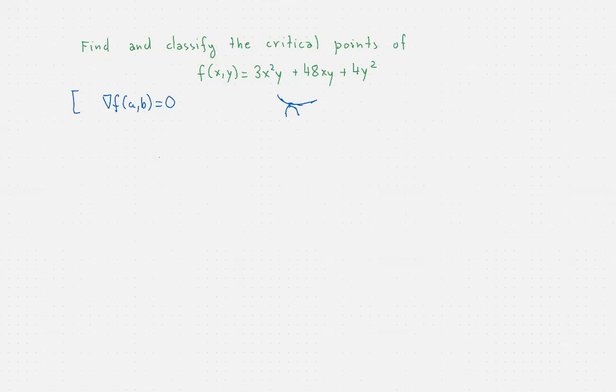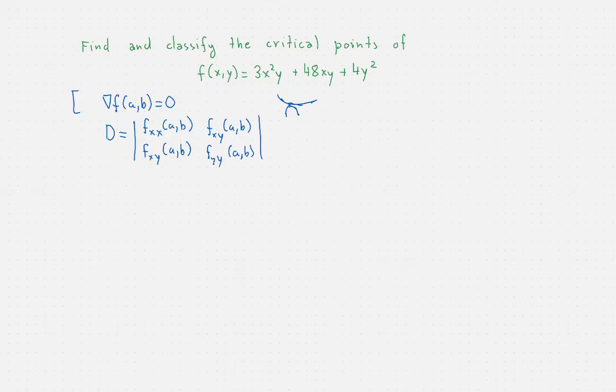In any case, the bottom line is that once we have a critical point, in order to find what kind of situation we have in our hands, we compute this determinant D consisting of second-order partial derivatives.